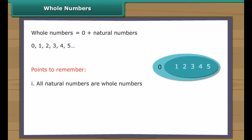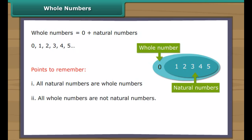Whole numbers. Whole numbers include zero and all the natural numbers. Points to remember: one, all natural numbers are whole numbers. Two, all whole numbers are not natural numbers. Three, there is no largest whole number.